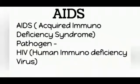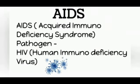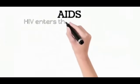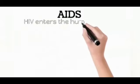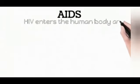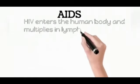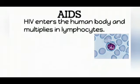Next is HIV AIDS — Retrovirus, Human Immunodeficiency Virus. This is a viral disease that affects immunity. The HIV virus enters the human body and multiplies in lymphocytes. Lymphocytes are a type of white blood cell which give immunity to our body.